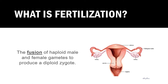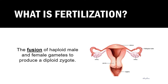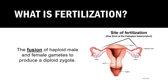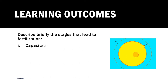Fertilization is a process of fusion between a haploid male and haploid female gamete to produce a diploid zygote. This process occurs at the early sites of the fallopian tube or oviduct. In this video, we are going to focus on the four stages of fertilization.